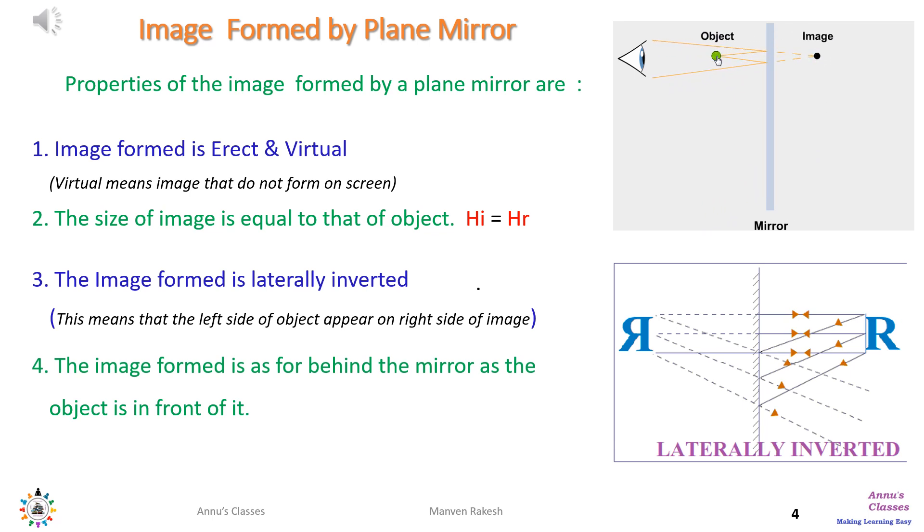Laterally inverted is explained here by the figure. That means that the left-hand side of the image would be same as the right-hand side of the object.